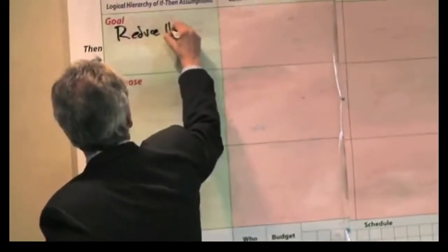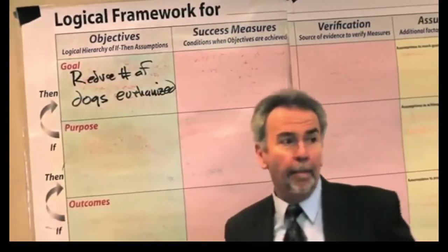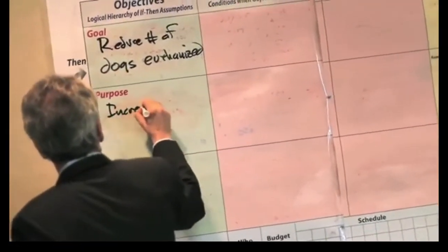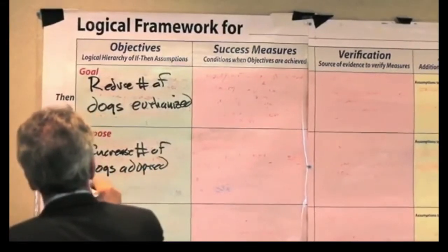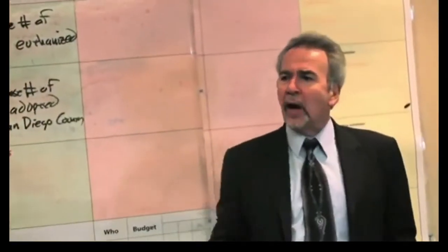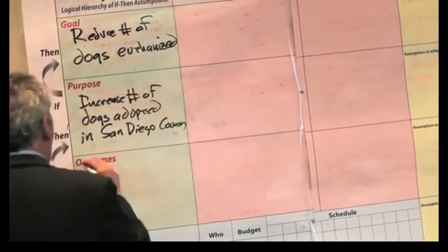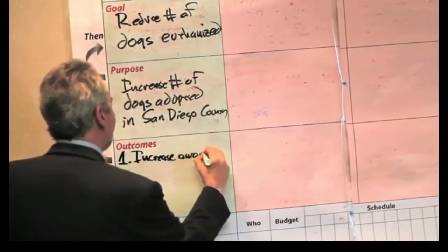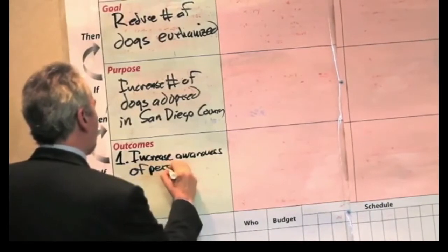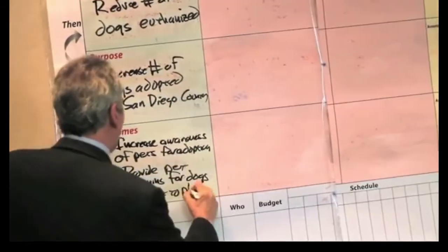The goal we stated was: reduce the number of dogs euthanized. So what do we have to do in order to reduce the number of dogs euthanized? Increase the number of dogs adopted — in San Diego County. We then begin to structure the hierarchy of objectives. One outcome: increase awareness of pets available for adoption. Another: provide pet training for dogs that are difficult to place. We've established a hierarchy of objectives.